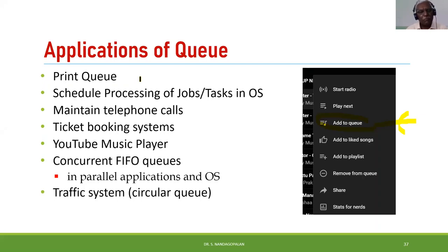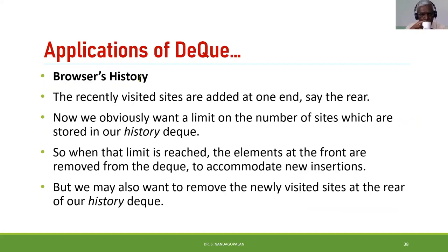Ticket booking systems, music players, and concurrent FIFO queues are other queue applications. Traffic systems can be implemented using a circular queue — vehicles come in a queue fashion on four-direction lanes, and traffic clearance proceeds on a circular basis, which a circular queue represents well.